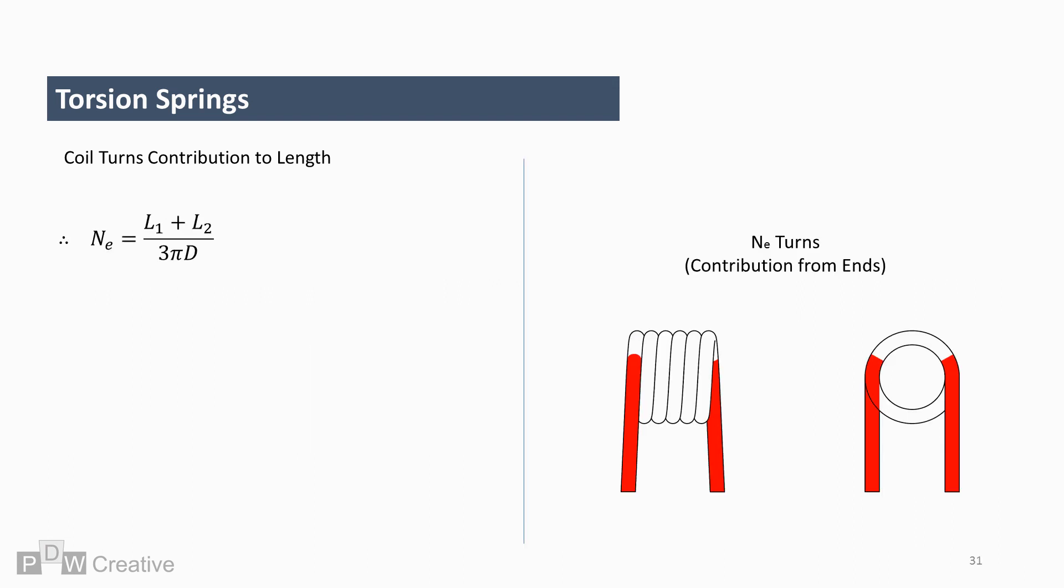Let's start with the contribution from the arms. NE equals L1 plus L2 over 3 times pi times D. NE is the contribution from the arms, L1 is the length of arm 1, and L2 is the length of arm 2.